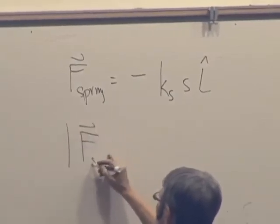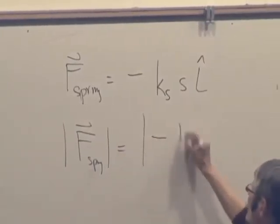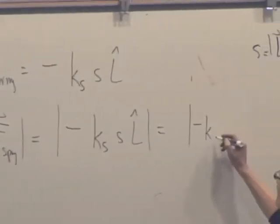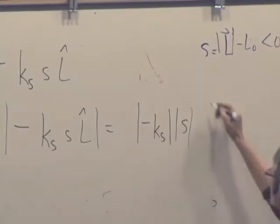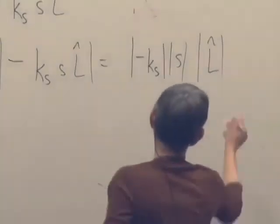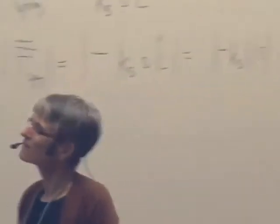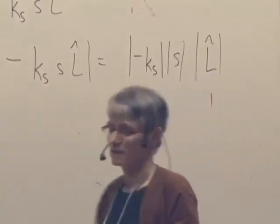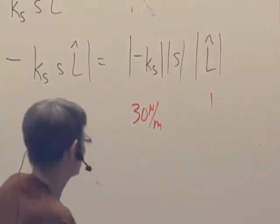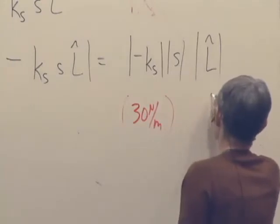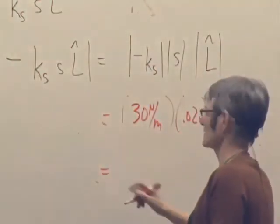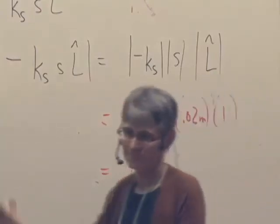The magnitude of the spring force is the absolute value of minus k sub s times the absolute value of s times the magnitude of l hat. The magnitude of the unit vector is 1. The k sub s looks like 30 newtons per meter. You just calculated the stretch was 0.02 meters. So that does indeed look like 0.6 newtons.